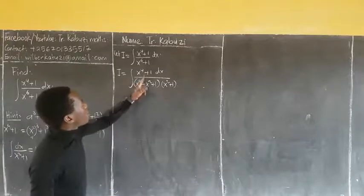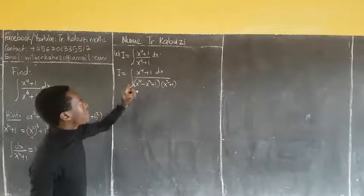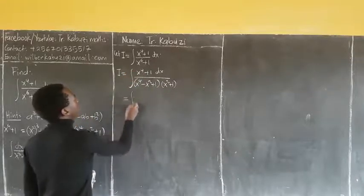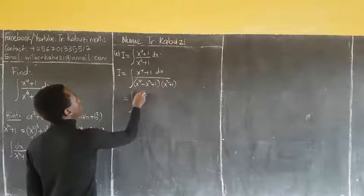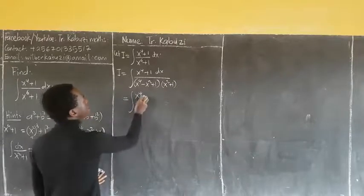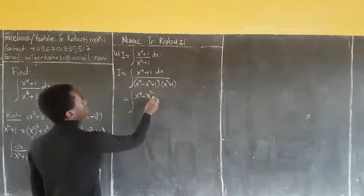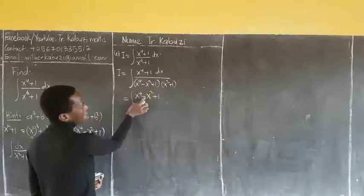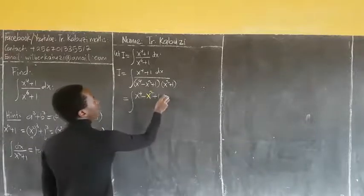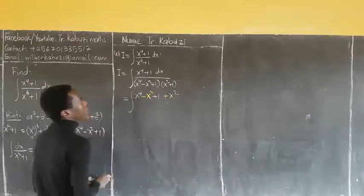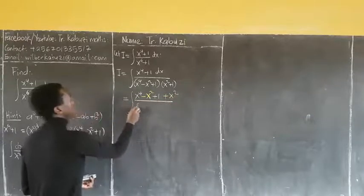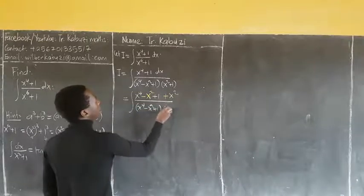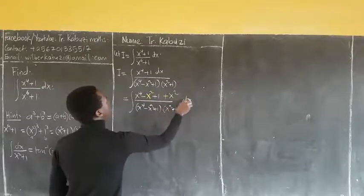Now you see that the numerator x⁴ + 1 is almost like x⁴ − x² + 1, but there is something missing. So I am going to write this term. I need a minus x² to complete it. Because that wasn't there originally, if I add a minus x², on the other side I add a plus x². This gives (x⁴ − x² + 1) over (x⁴ − x² + 1)(x² + 1), with respect to x.